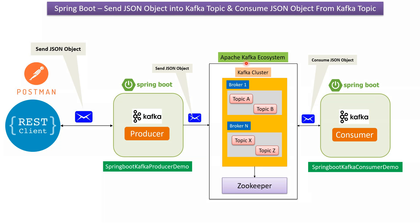Here you can see the Apache Kafka ecosystem and here you can see the Kafka cluster. It has brokers, and each broker has topics. Here you can see the Spring Boot application — the Spring Boot Kafka producer demo. We will use a POST REST client which will send a JSON object to this Spring Boot application, and it has producer code. Using that, it will send the JSON object to the Kafka Topic.